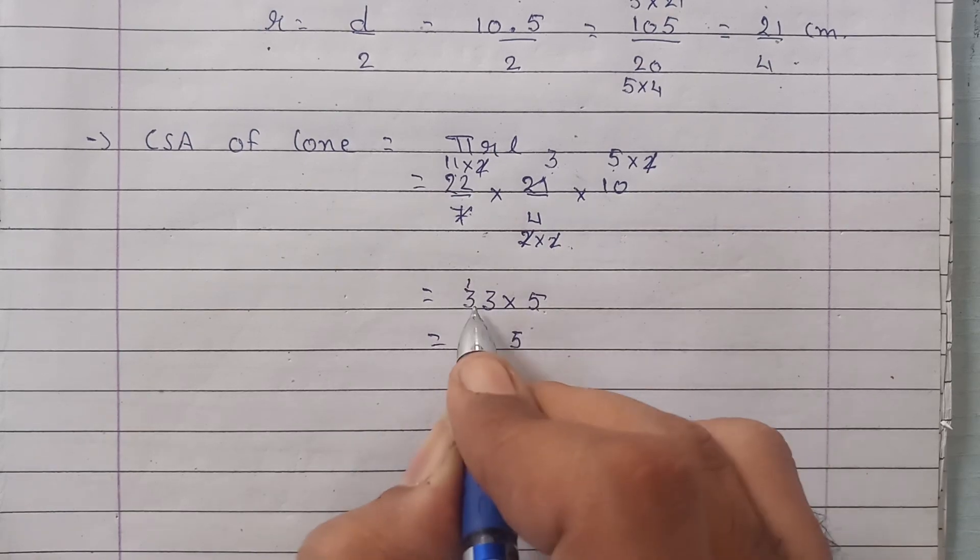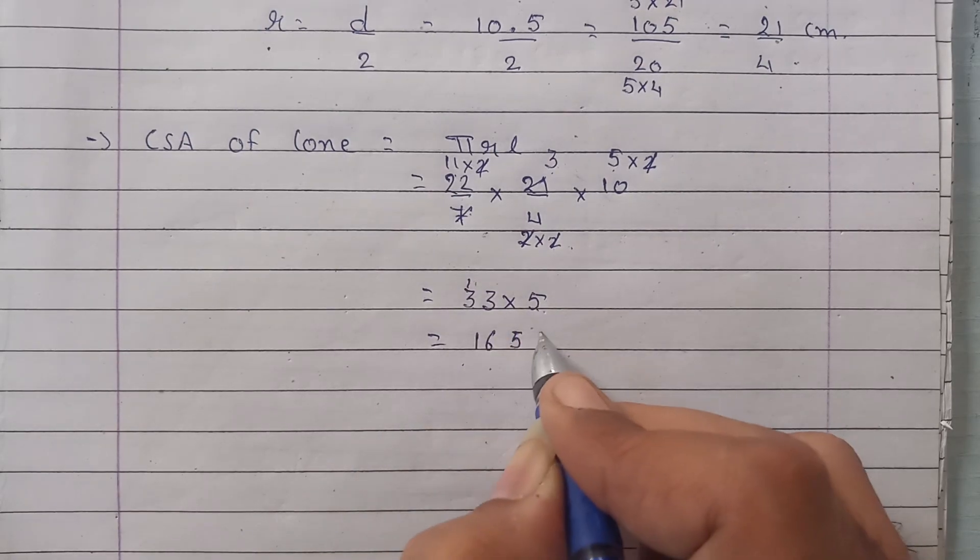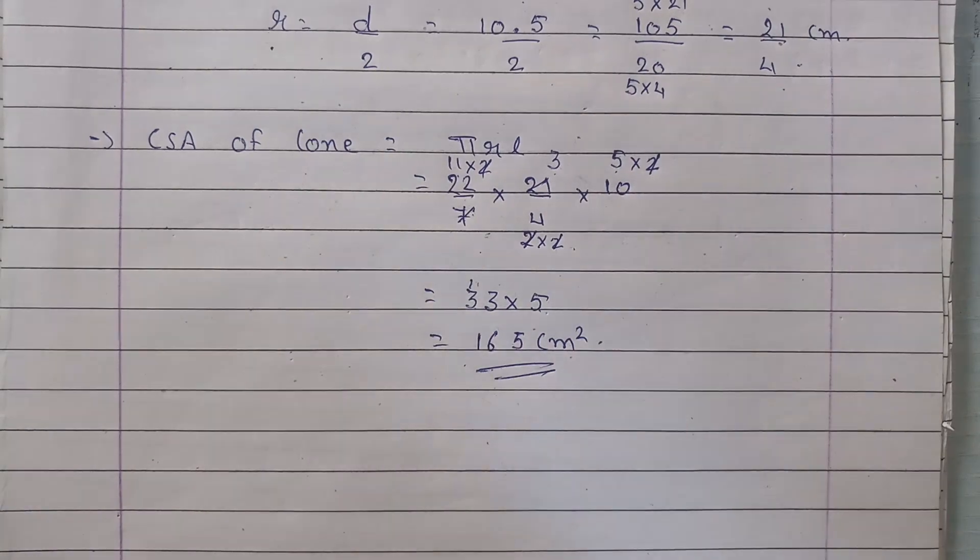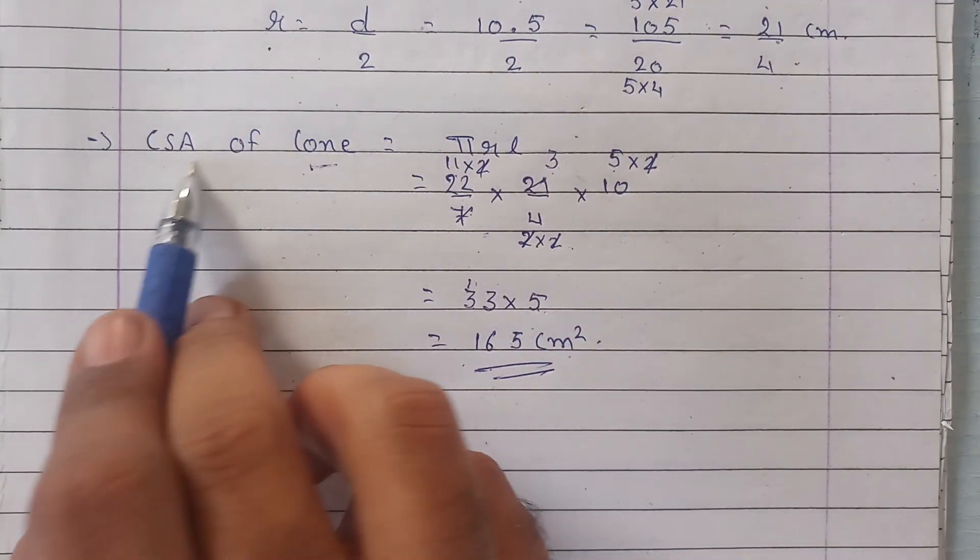And finally humare paas bachega 11 into 3 into 5, so that is 33 into 5. Now multiplying this we will have 5 into 3 is 15, 5 into 3 is 15 plus 1 is 16, that is 165 centimeter square. So this is our cone curved surface area.